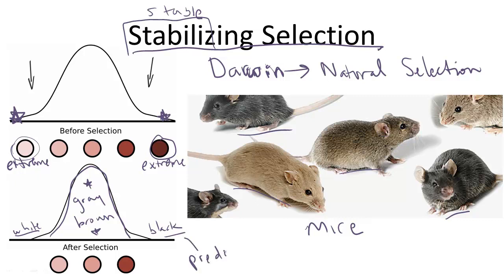So predators kill the white and black mice, and therefore the gray and brown are more available. So stabilizing selection, in summary, helps to stabilize the extremes of a trait, and thus you're getting that elimination of extremes.